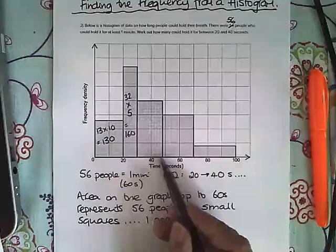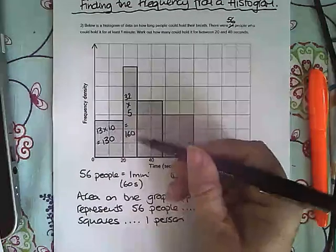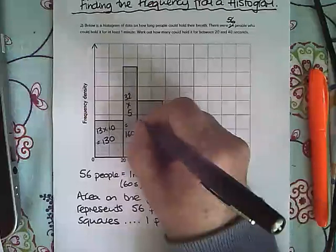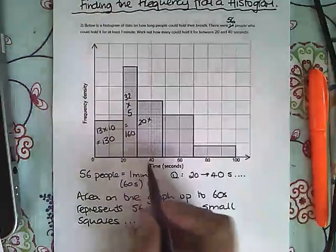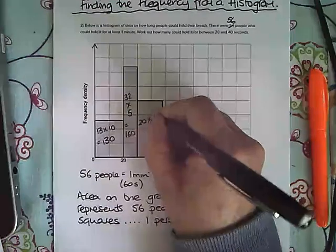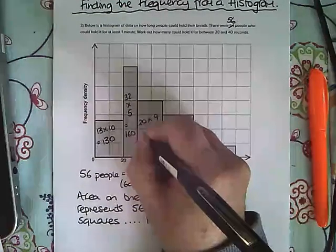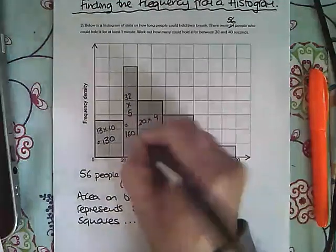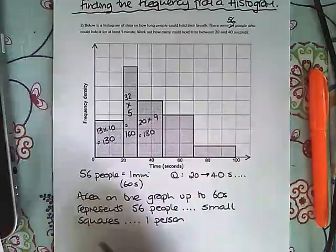That is 20 tall, and I'm going to times that by 9. 20 times 9 is 180 small squares. Then we're only going up to the 60 second mark here.